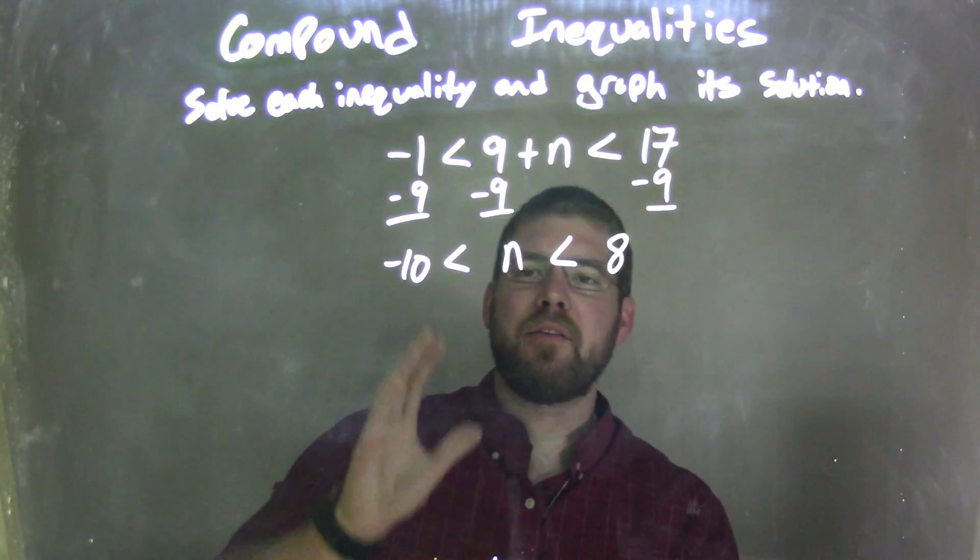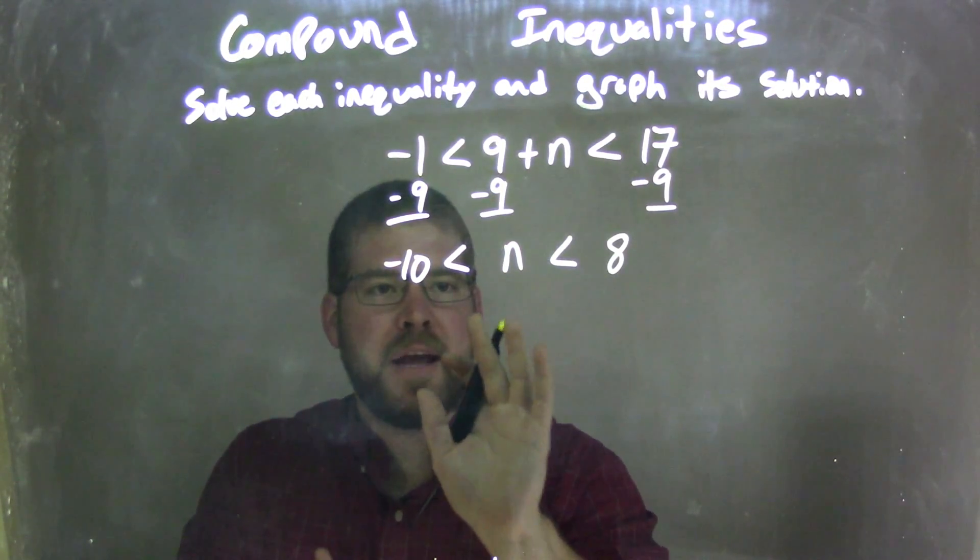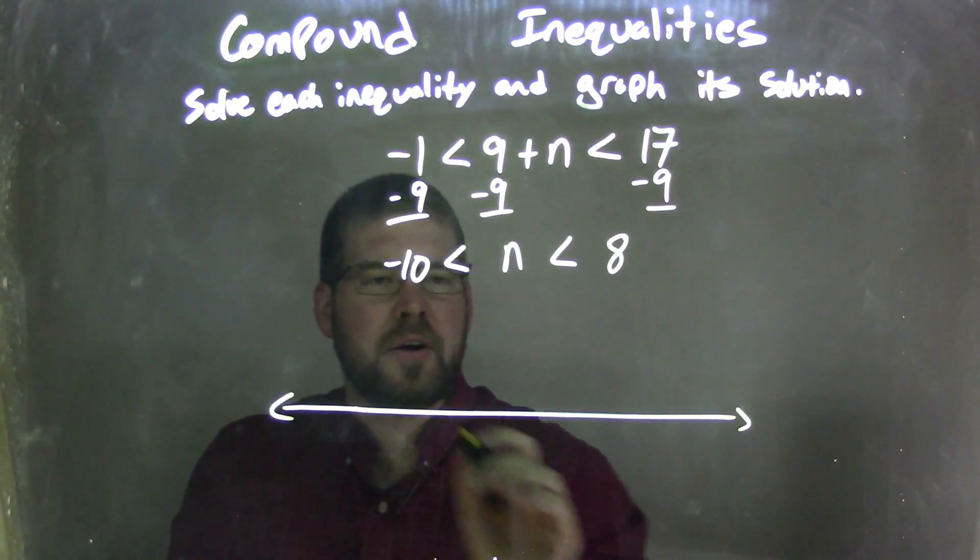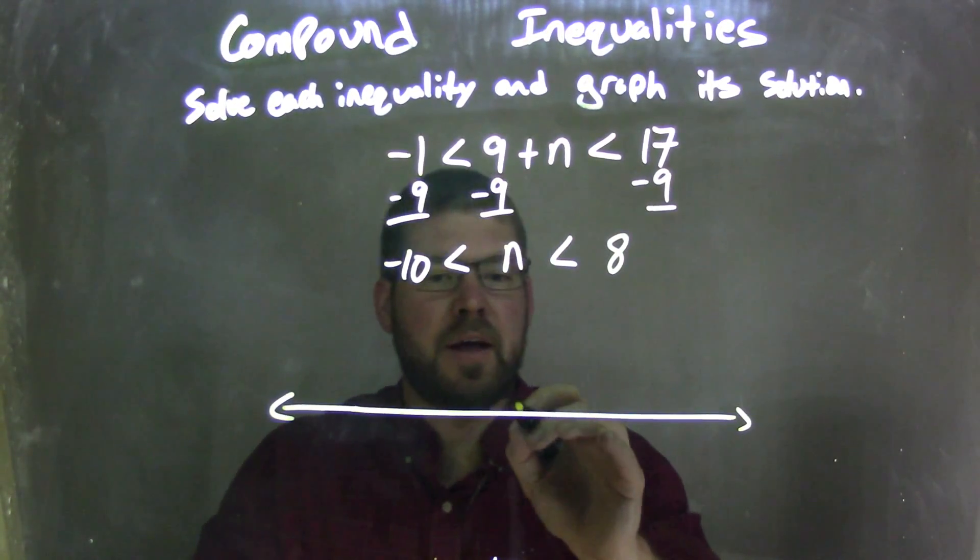So now we have this compound inequality: negative 10 is less than n, which is less than 8. I can graph it now, n's isolated. By graphing it, we want to make sure our number line encompasses up through negative 10 and 8, and usually I go a little bit past that.